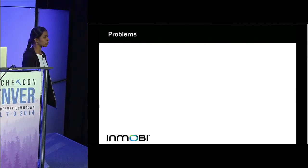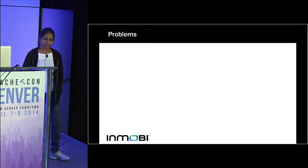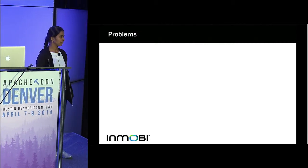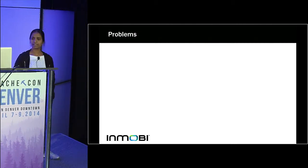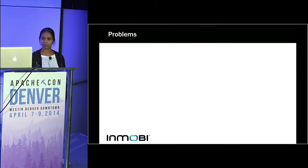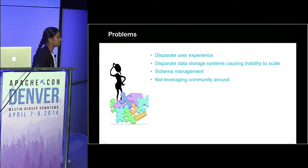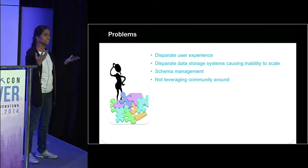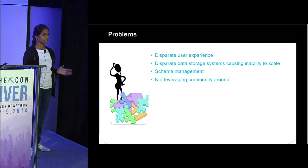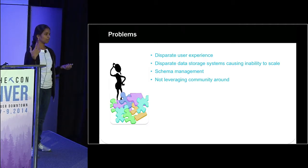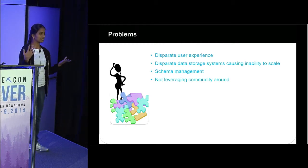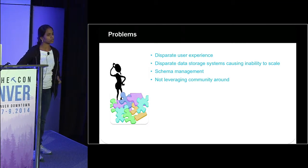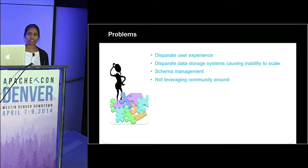All is fine, but what are the problems Inmobi is facing? The individual systems work perfectly fine and give good response times to users. But there is a disparate user experience because the same users go to a dashboard system and then to an ad hoc query system, and the same thing is shown with different names across the two systems — which is confusing. Also, they have their own Java or custom API to talk to the systems directly, which makes the user experience bad.